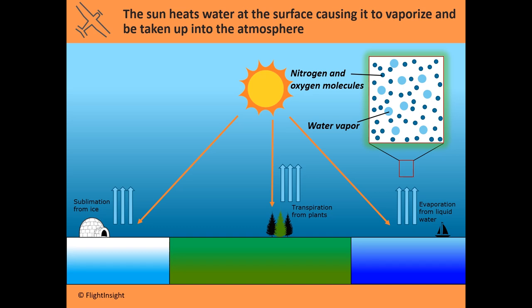The first process is sublimation, which is the sun heating up ice at the surface and causing the layer at the top of that ice to vaporize and be carried up into the atmosphere. The second is transpiration, a byproduct of plants using water through photosynthesis — that water is vaporized by sunlight and taken into the atmosphere. And then there's evaporation, which you're probably familiar with: liquid water vaporizing as the sun warms it up. All three processes introduce water vapor into the atmosphere.